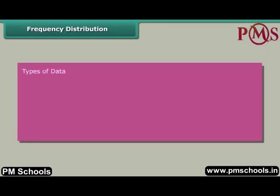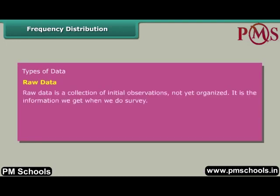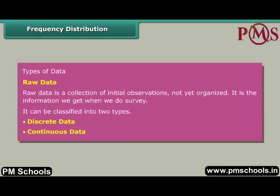Frequency distribution. Types of data. Raw data is a collection of initial observations not yet organized — it is the information we get when we do a survey. It can be classified into two types: discrete data and continuous data.